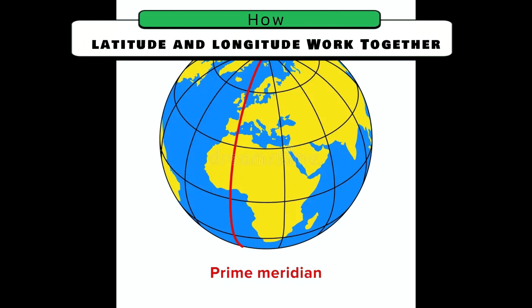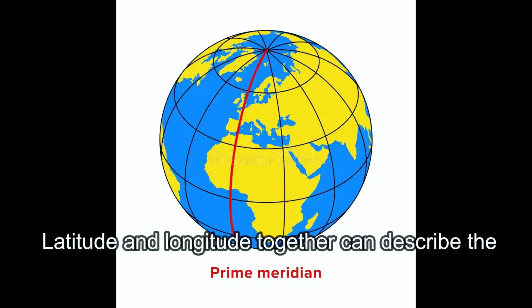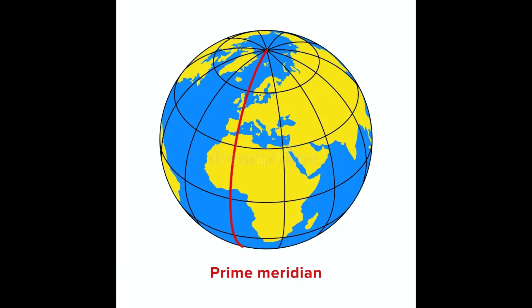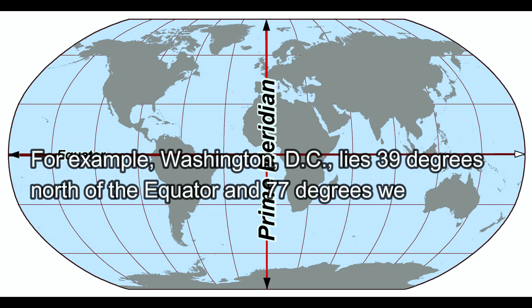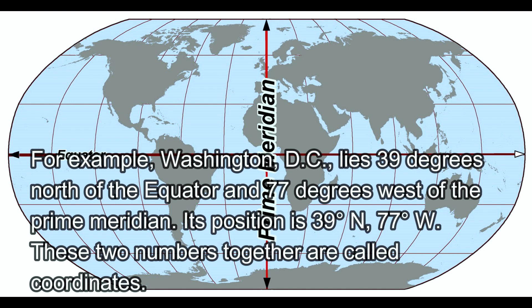Now let's see how latitude and longitude work together. Latitude and longitude together can describe the exact location of any place on earth. For example, Washington DC lies 39 degrees north of the equator and 77 degrees west of the prime meridian, so its position is 39 degrees north and 77 degrees west. These two numbers are called the coordinates.